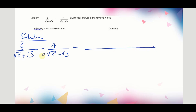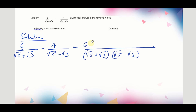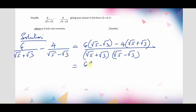The first thing will be to get the LCM of the denominators. These two give us (√5 + √3)(√5 − √3). Working it out, the numerator becomes 6(√5 − √3) minus 4(√5 + √3).